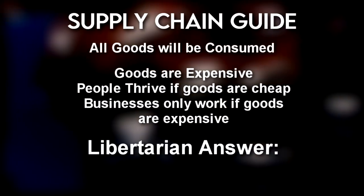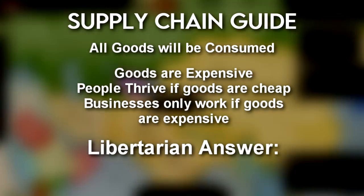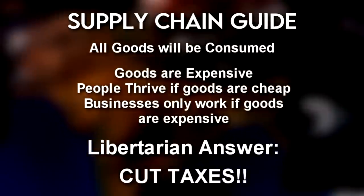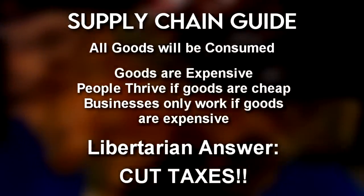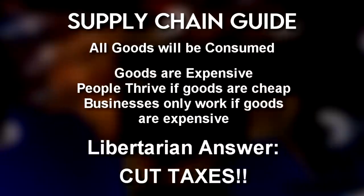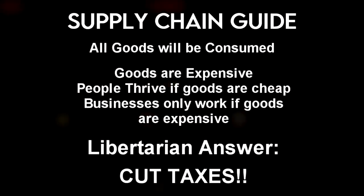So what would a libertarian do to ensure that goods remain affordable across all sectors of the market? Well, the classic libertarian talking point is, of course, to cut taxes. Remember that when taxes are lower, all pops — including owners of businesses — can afford to spend more on goods. They could afford more expensive goods, even if they're above average price.